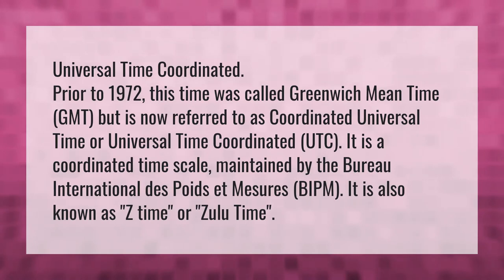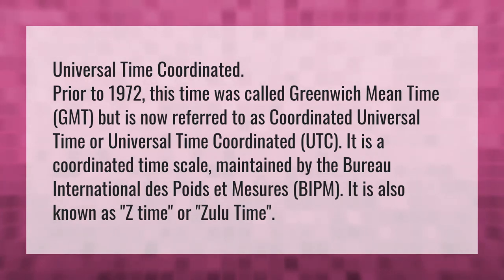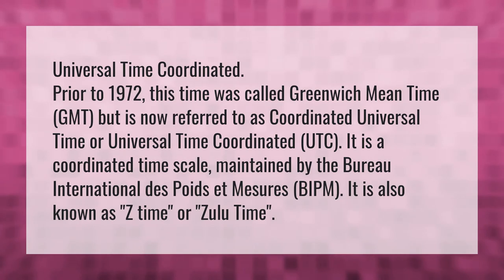Universal Time Coordinated. Prior to 1972, this time was called Greenwich Mean Time, GMT, but is now referred to as Coordinated Universal Time, or Universal Time Coordinated, UTC.